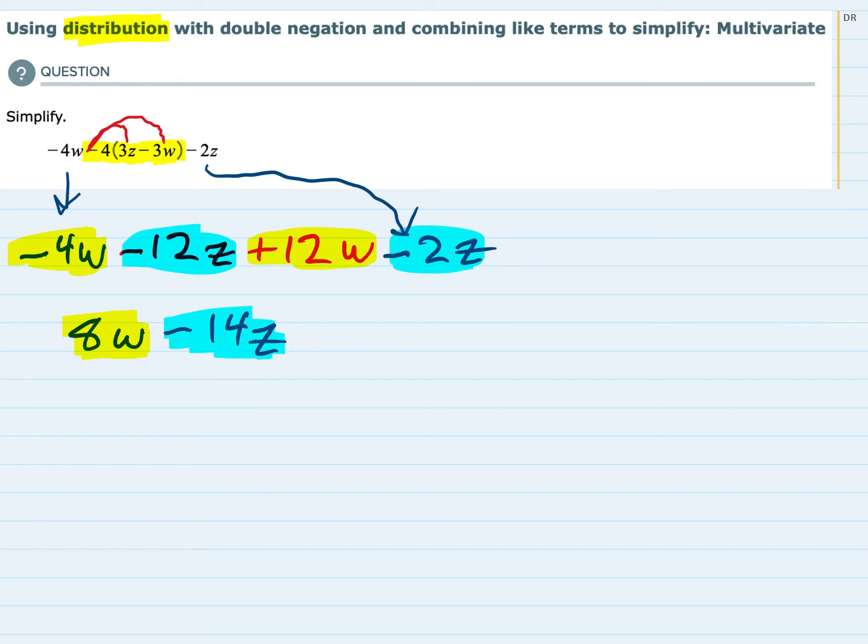So we have combined the W terms and combined the Z terms. This is our simplified expression.